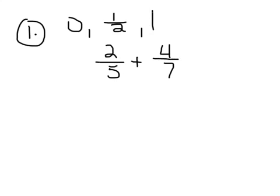The directions ask us to use the benchmarks of 0, one half, and one whole to estimate the sum or difference and then find the actual sum or difference. So number 1, we have two fifths plus four sevenths. Alright, let's estimate first.